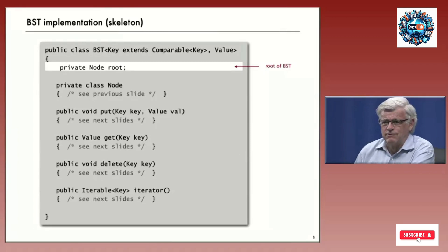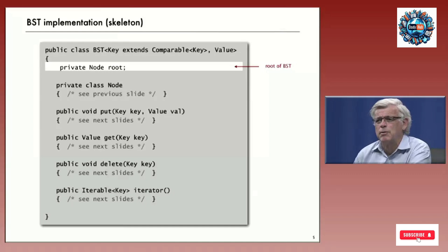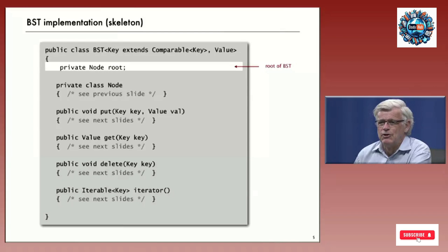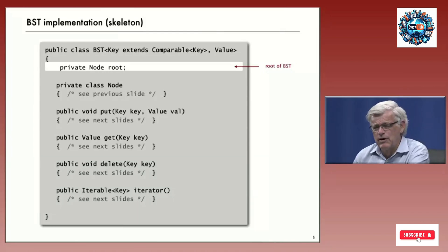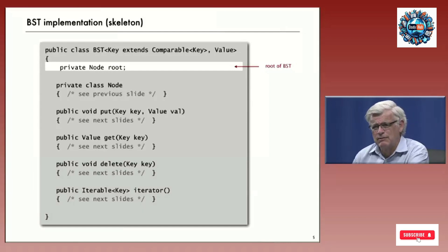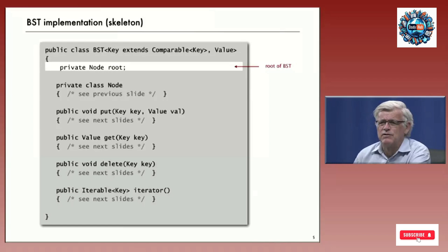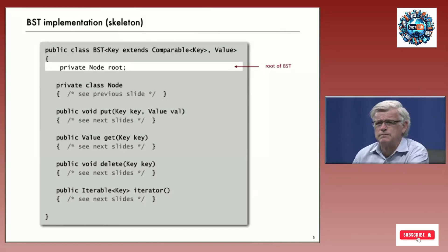Here's a skeleton of our symbol table implementation. It's for comparable keys associated with values — both generic types. The only instance variable is a link to the root node called root. The inner class node is as described, and we'll need implementations of put and get, as well as delete and an iterator.